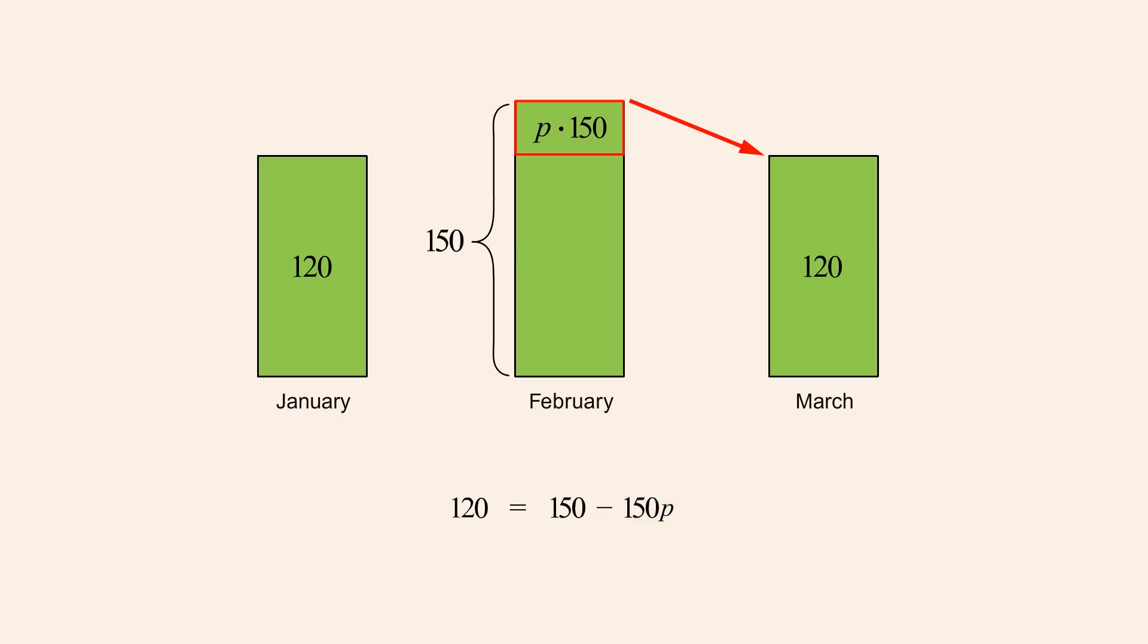To solve this equation, we would like p alone on the left side. So we start by adding 150p to both sides of the equation, which allows us to cancel the 150p term on the right. We then subtract 120 from both sides, which allows us to cancel the 120 term on the left. Completing the arithmetic on the right, 150 minus 120 is 30. Finally, dividing both sides by 150 allows us to cancel 150 in the numerator and denominator of the fraction on the left, leaving the equation p equals 30 divided by 150, or p equals 0.2.